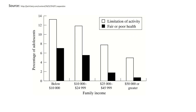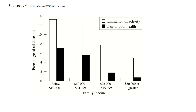Here we have the percentage of adolescents in households who are of fair or poor health, looking at this across a variety of categories of family income. In the poorest category of family income, we find the highest percentage of poor health teenagers, whereas in the richest families we have the lowest. The rich kids have more opportunities — they're more active, they probably engage in more healthy behaviors, going to gyms or joining sports clubs or eating more diverse and nutritious foods.